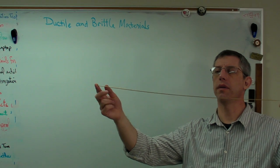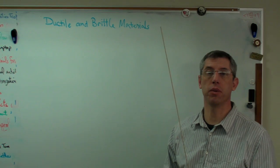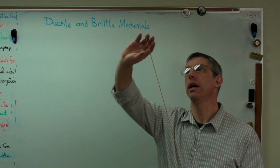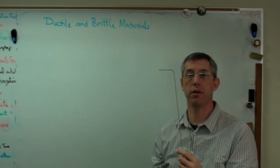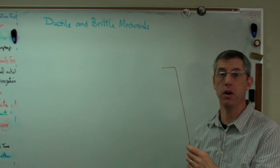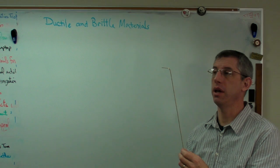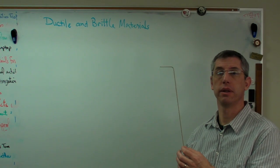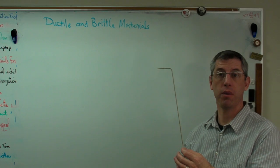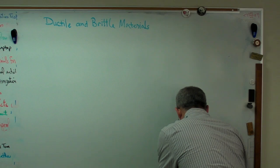I do this, now it's permanently deformed. When I let go it didn't go back to its original shape. This is a ductile material. It's bent and this is called plastic deformation. It bent without breaking.